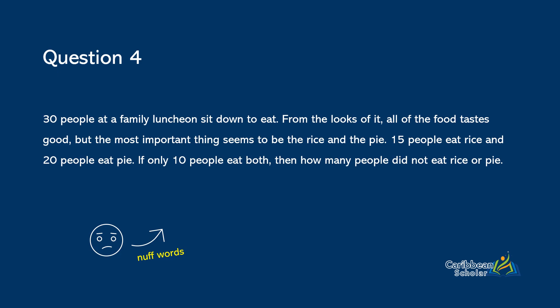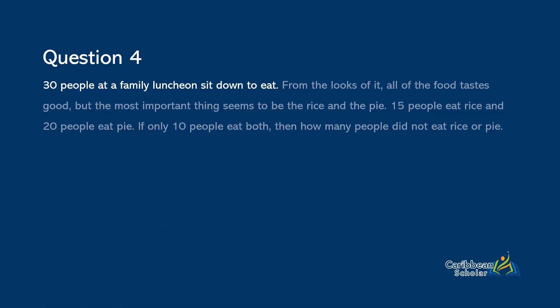So let us see how that works. Okay, first sentence. Thirty people at a family luncheon sit down to eat. Okay, so straight away you can say that the total number of people is thirty. Let's move on to the second sentence. It says from the looks of it, all of the food tastes good, but the most important thing seems to be the rice and the pie. And well that is great news, but it doesn't actually have any mathematical information. So we could just throw away the whole sentence.